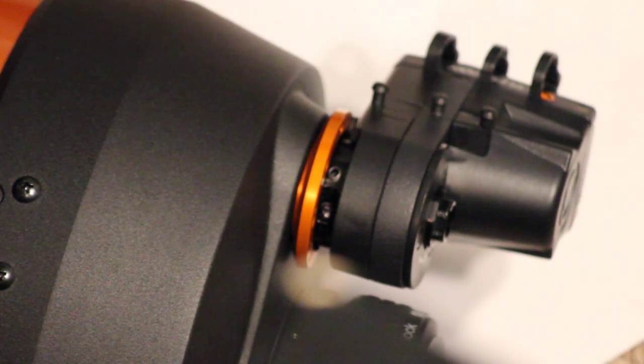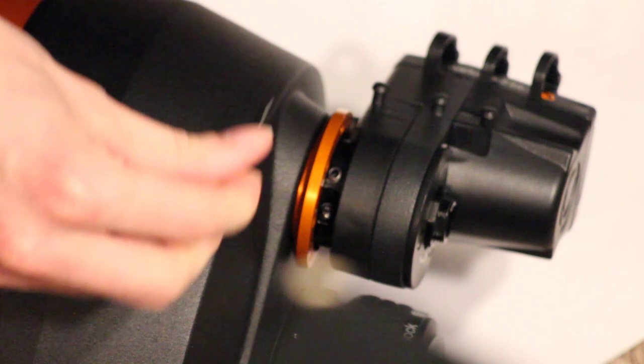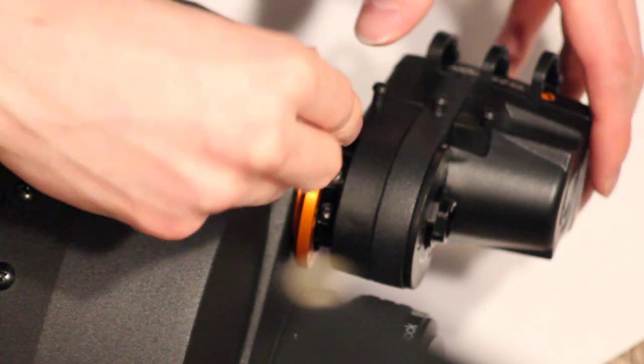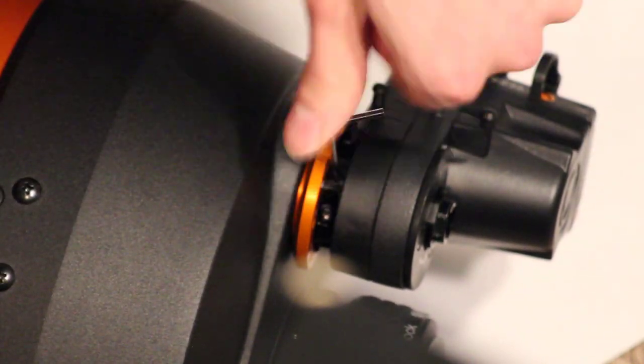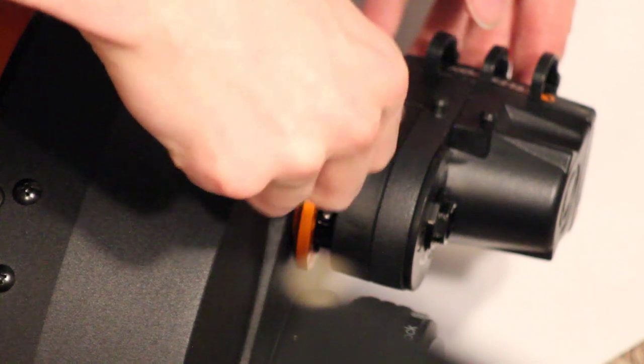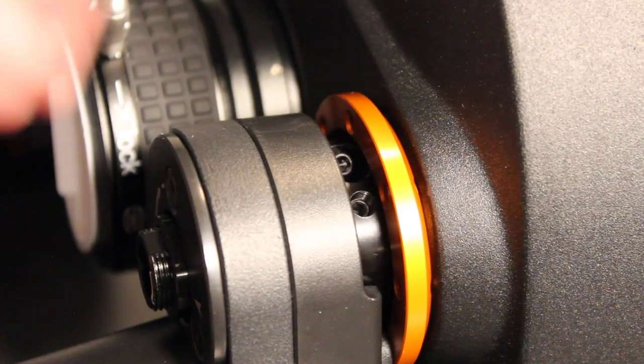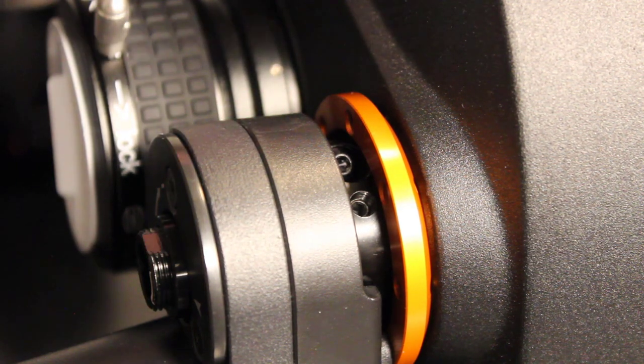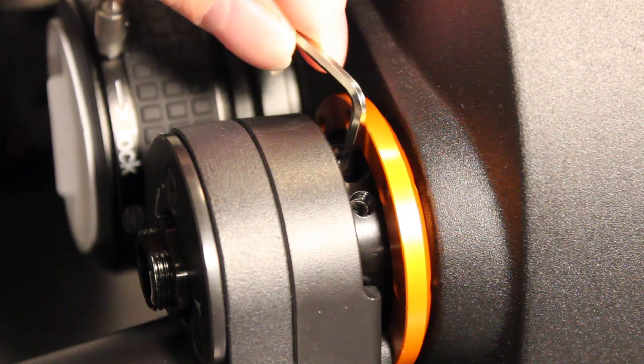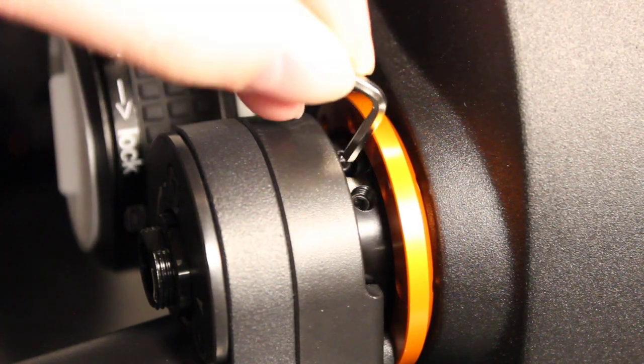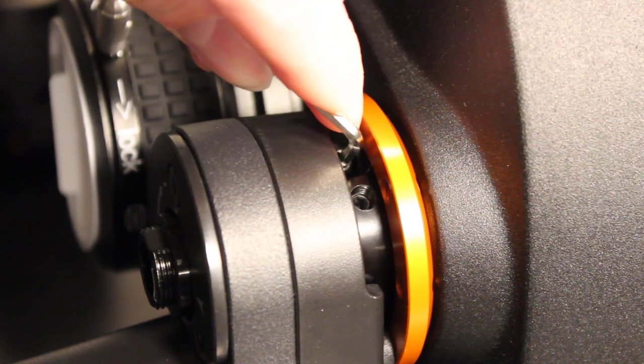Now that the motorized focuser is secured to the telescope, you just need to go ahead and finish tightening that set screw that you didn't finish tightening earlier. The final step in installing the Celestron motorized focuser to your telescope is to re-tighten the clamping bolt that we loosened earlier. So let's just go ahead and do that now. Nice and tight. That way, you don't get any slippage or anything like that. And if you do, obviously, you can go back and re-tighten things if you need to.